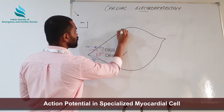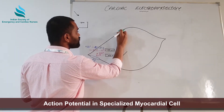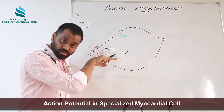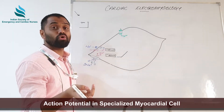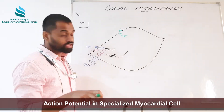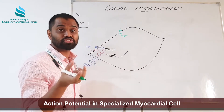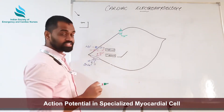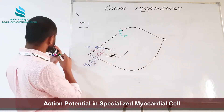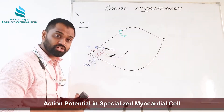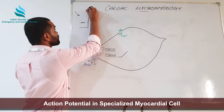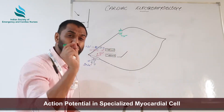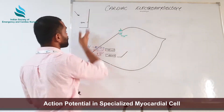Which channels are responsible for the action potential in the SA node? They are the voltage-gated calcium channels. In contrast, in contractile myocardium it was the voltage-gated sodium channels responsible for depolarization. Here it is the voltage-gated calcium channels. In contractile myocardial cells, the depolarization — phase zero — happened all of a sudden, very swiftly, because sodium channels perform fast conduction. But calcium channels perform slow conduction.